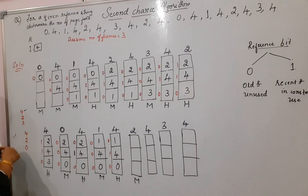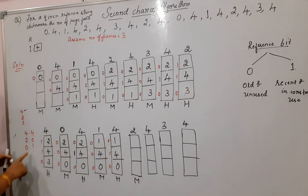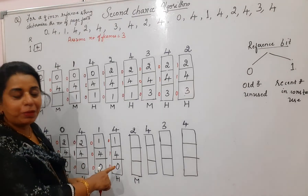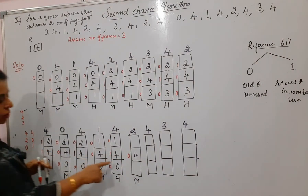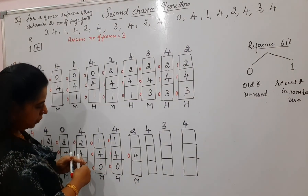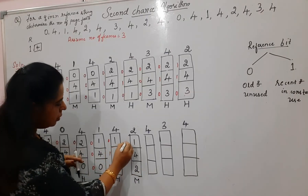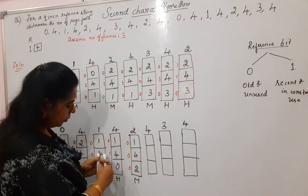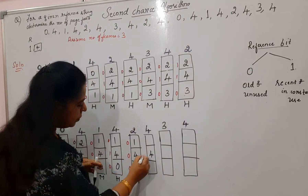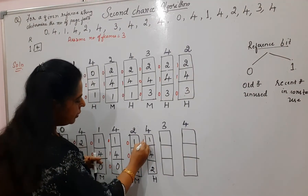Next is page 4 — already in memory, change its reference bit from zero to one — hit. Next is page 2 — miss. FIFO order: page 4 is oldest (reference bit one — skip, change to zero), next oldest is page 0 (reference bit zero — replace). Replace page 0 with page 2. Reference bit for page 2 is zero. Next is page 4 — already in memory, change reference bit from zero to one — hit.